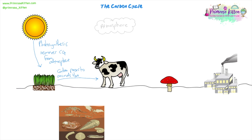Animals obviously use some of that carbon to grow, as discussed in the food chains video, but they will also lose some as waste. So the carbon is trapped up in the tissues and bodies of these plants and animals. Eventually those plants and animals are going to die, and when they die...